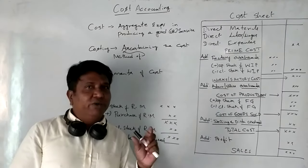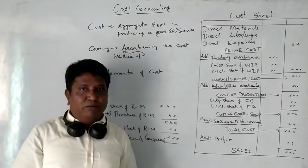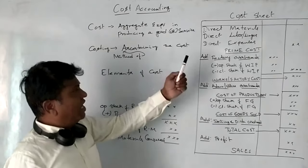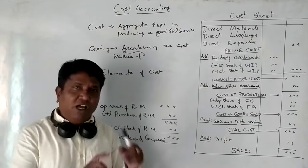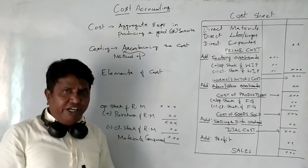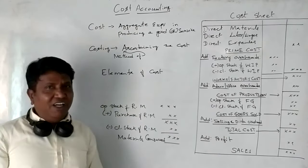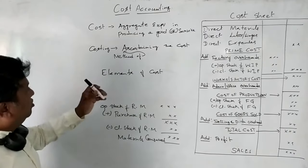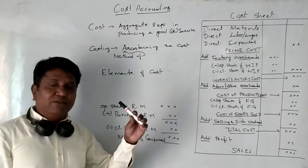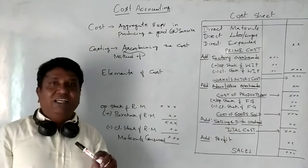For example, in manufacturing, you have direct material, direct labour, and direct expenses. You prepare a cost sheet to find out the cost. So, the method of ascertaining the cost is called Costing, and the aggregate expenditure incurred in manufacturing a product or a service is called Cost.